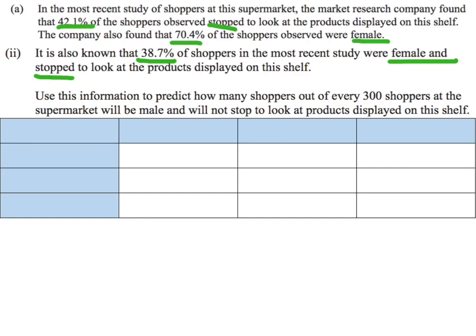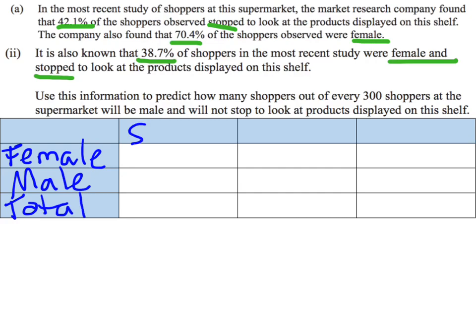Before I even look at the question I'm just going to try and process the information that they've given us. I could draw this as a probability table, a tree diagram, or a Venn diagram. I've got a little table here and I'm going to use that. My two variables are whether the shoppers are male or female, and whether people stopped or did not stop, and we need totals for each.